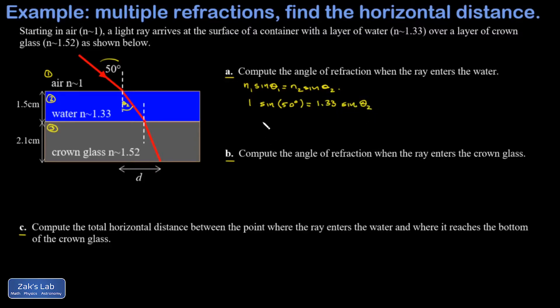Theta 2 is the only unknown left in this equation, so we simply divide by 1.33 and then invert the sine function. When I run the numbers on this to three sig figs, I get 35.2 degrees.